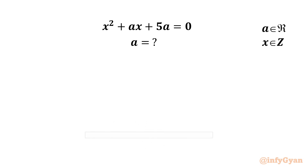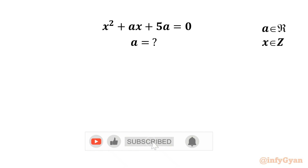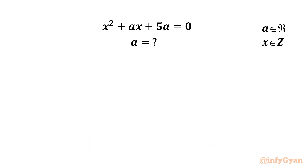Hello friends, welcome back to InfiGam. Today in this video we have one very interesting question from quadratic equations. We are going to calculate the real values of A for which x is an integer. The equation is x squared plus ax plus 5a equal to 0. Let's get started by writing our quadratic equation first.